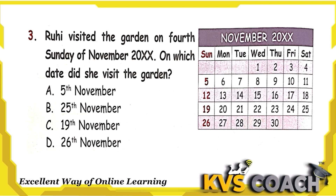The next question is: Ruhi visited the garden on the 4th Sunday of November. This is the November calendar. On which date did she visit the garden? Counting Sundays: 1st Sunday, 2nd, 3rd, and the 4th Sunday — the date is 26th November. Option D is the right answer.